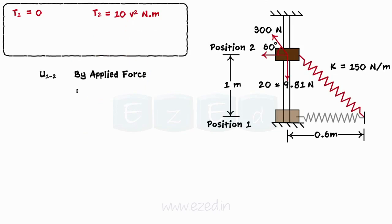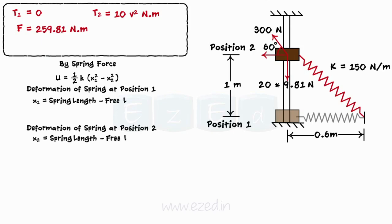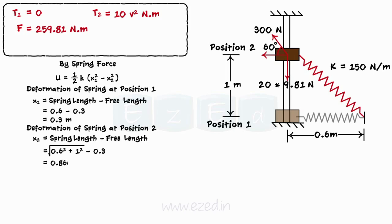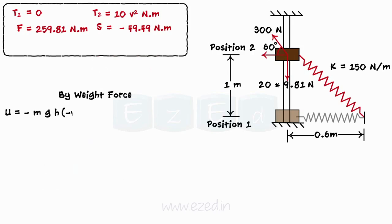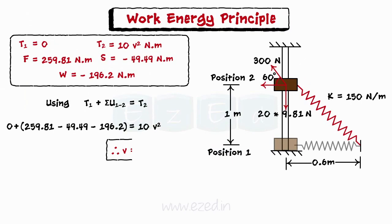Work done by force is given by F multiplied by s. On evaluating, we get work done as 259.81 Nm. Work done by the spring is given by half K(x1 squared minus x2 squared). Deformation of the spring at position 1 and position 2 is given by spring length minus free length. On evaluating, we get x1 as 0.3 m and x2 as 0.866 m. On substituting the values, we get work done by the spring as minus 49.49 Nm. Work done by weight force is given by minus Mgh. On substituting the values, we get the weight force contribution as minus 196.2 Nm. Using the work-energy principle and substituting respective values, we get the speed of the collar as 1.18 m per second.